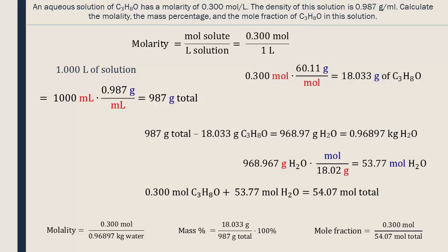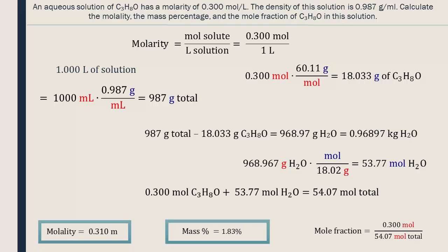The molality is 0.310 moles per kilogram, and we can write this as a small m. The mass percentage is 1.83%, and the mole fraction is 0.00555, and it doesn't have any units because they all get cancelled.